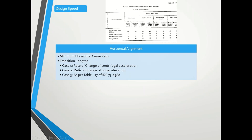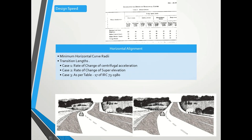The next important criteria in horizontal alignment is transition length. There are three cases for calculating transition length: rate of change of centrifugal acceleration (v³/CR), then l = e·b/2, and then as per Table 17 of IRC 73. You take the maximum of these three criteria and design accordingly. As you can see in the image, a curve without spiral transition versus a curve with spiral transition — the spiral makes vehicle entry much smoother. Transition is also needed to introduce super elevation gradually.